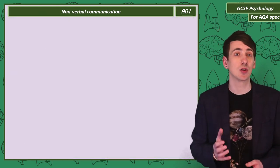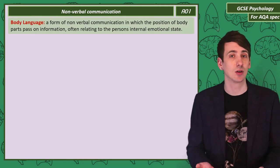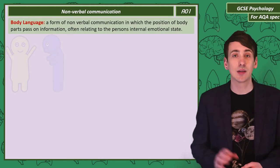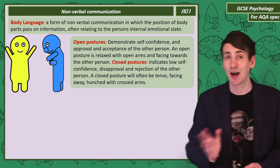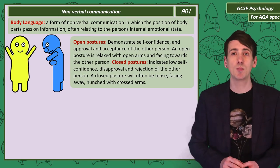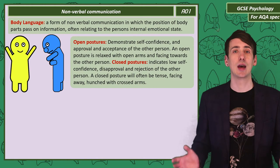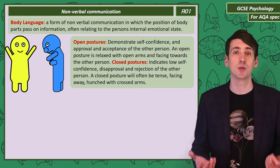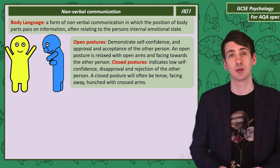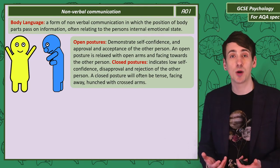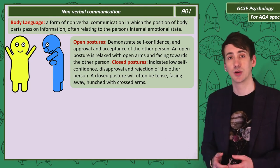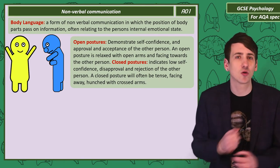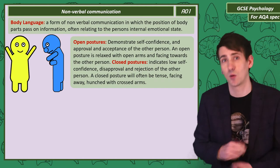Body language is how we use the position of our body parts to pass on information, usually about our emotional state. There's a clear distinction between open and closed postures. Open postures show self-confidence and indicate that we like the other person — relaxed and open with arms facing towards them. A closed posture suggests low self-confidence, disapproval and rejection — tense, crossed arms, hunched and facing away.